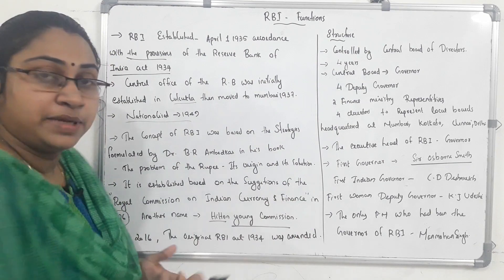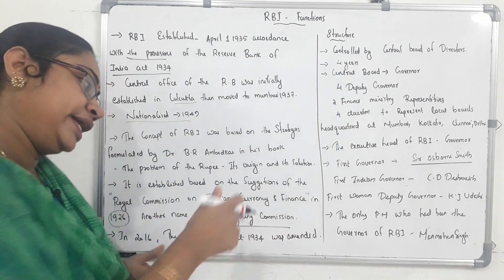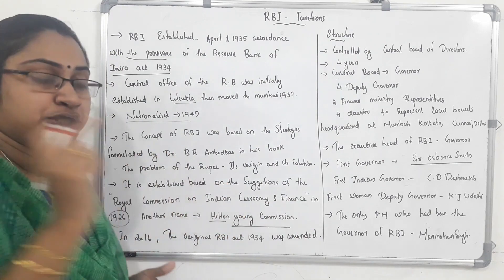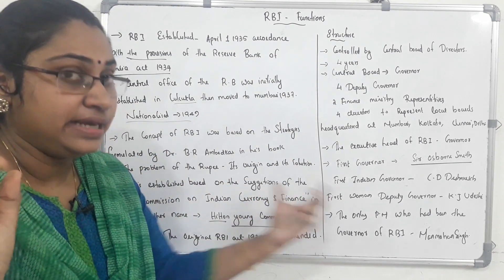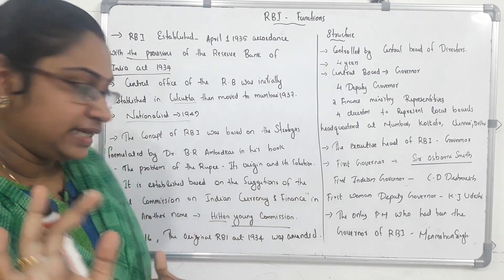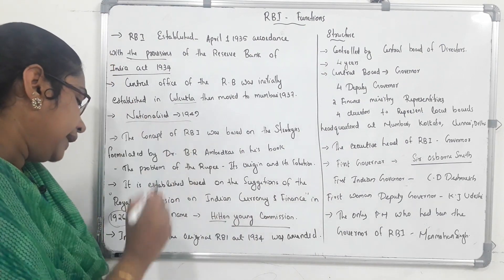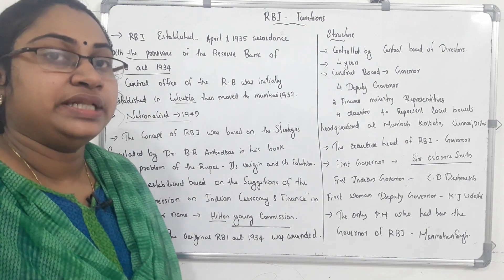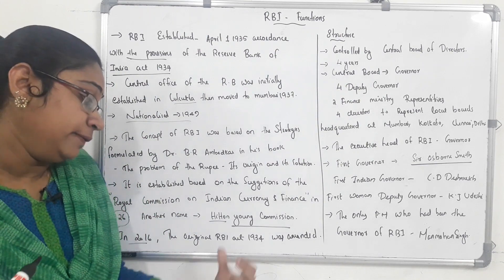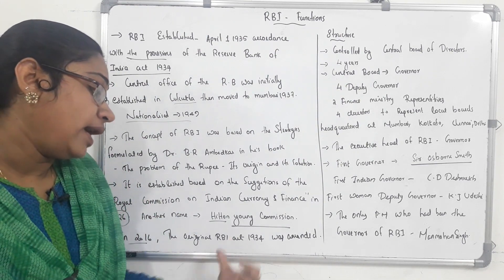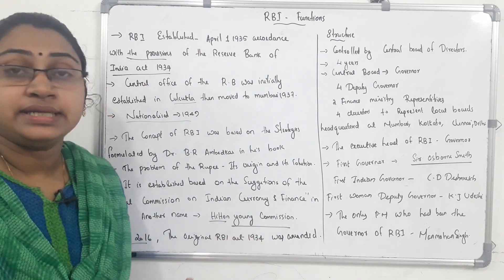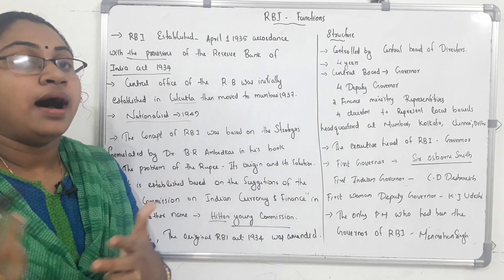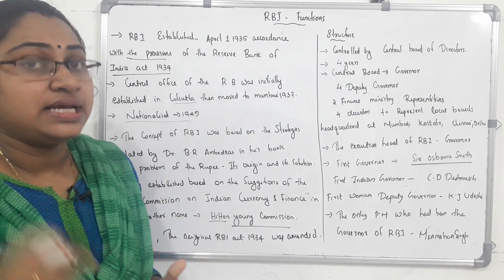The Hilton Young Commission — the Royal Commission on Indian Currency and Finance — recommended the establishment of the Reserve Bank of India. The RBI Act was subsequently made.